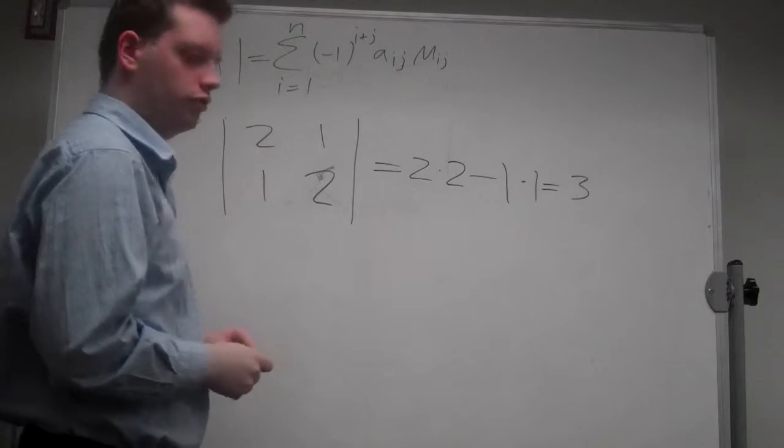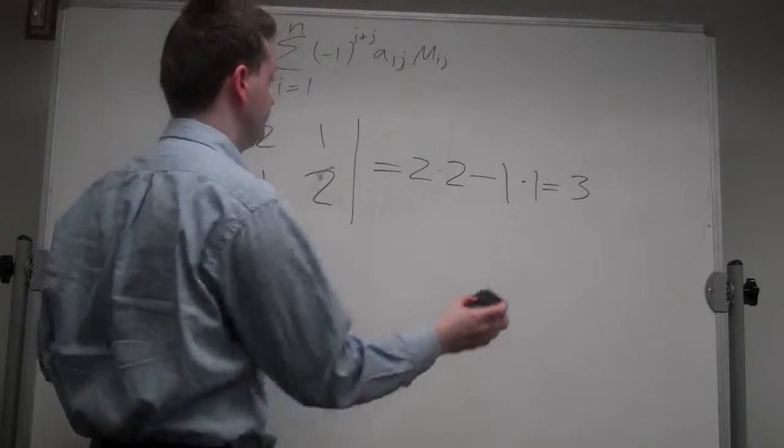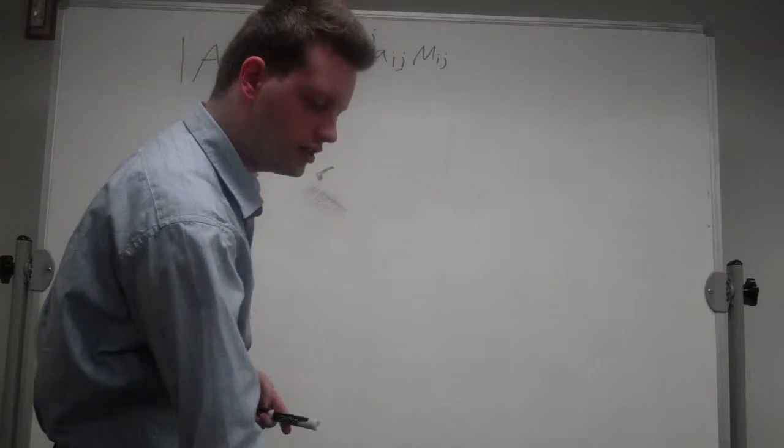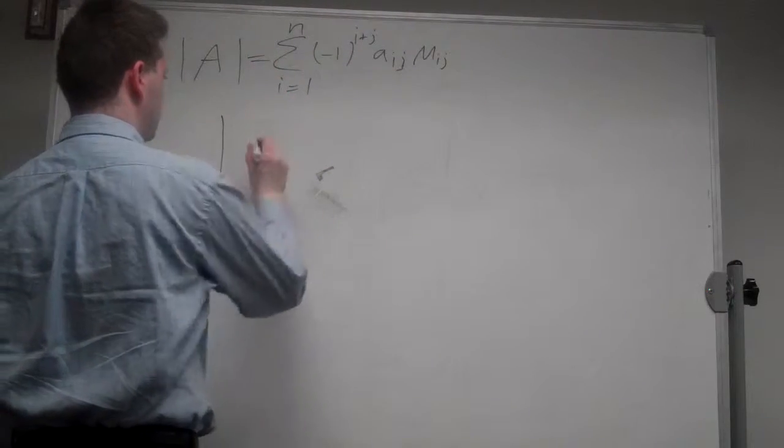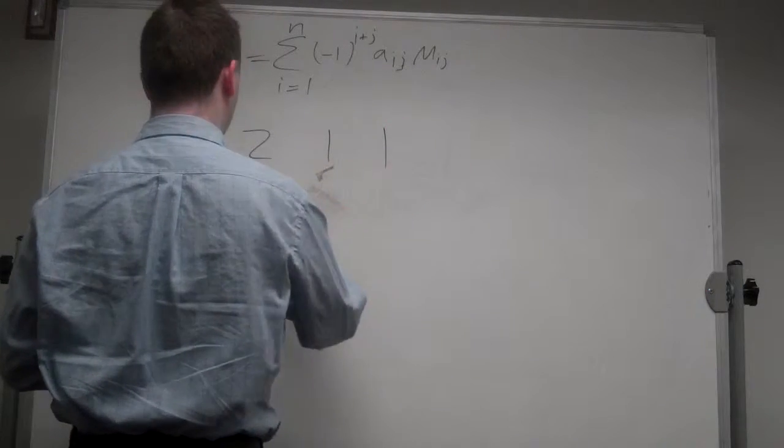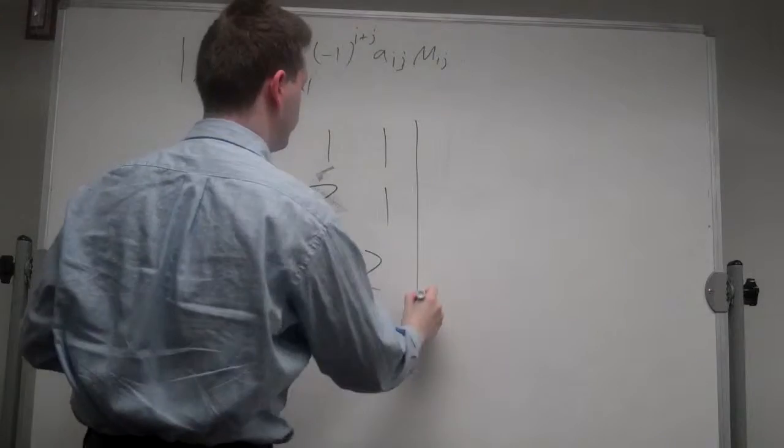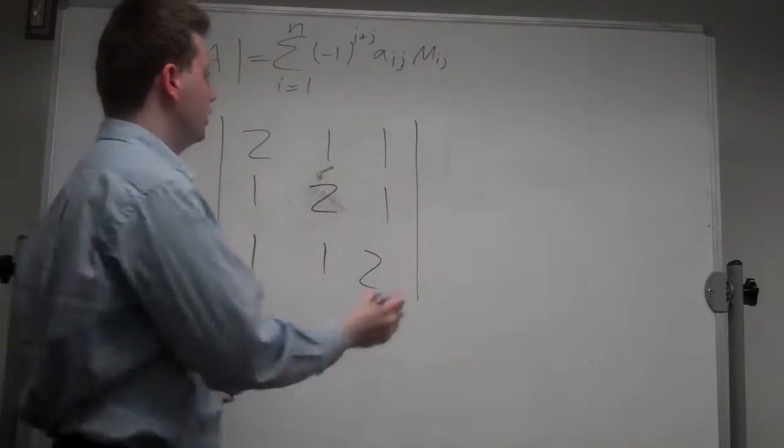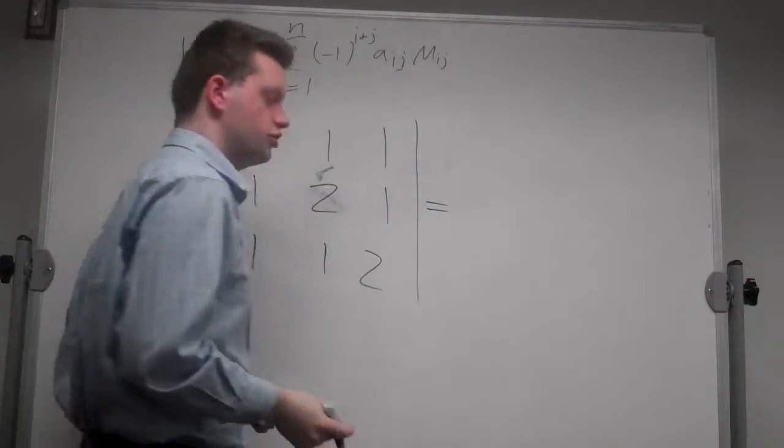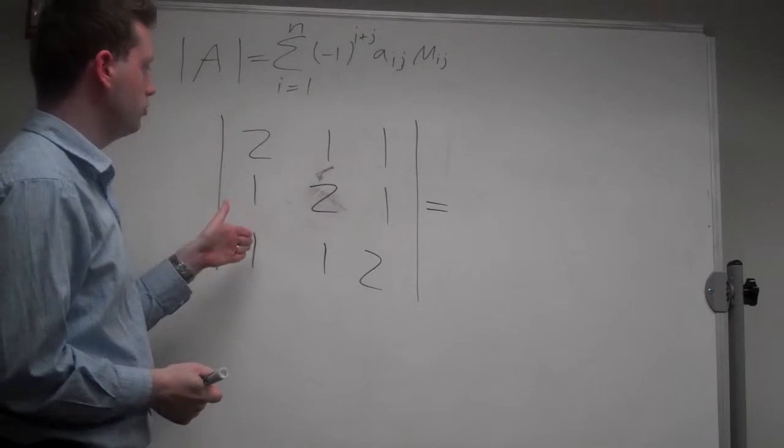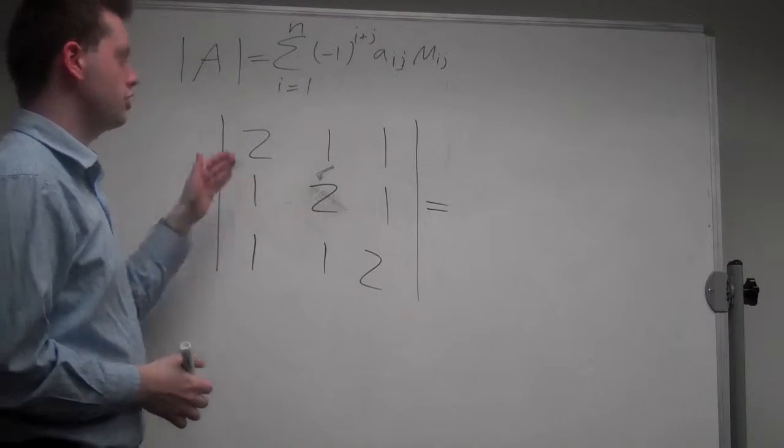Let's go to the 3 by 3 case. Take a similar matrix: [2, 1, 1; 1, 2, 1; 1, 1, 2]. To get the determinant of this matrix, let's again fix column 1 and start with row 1.